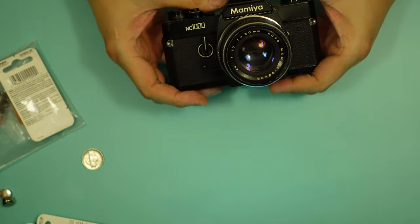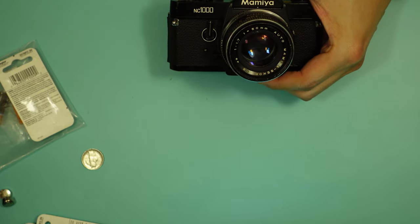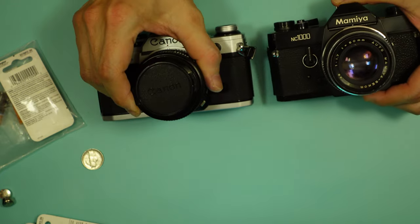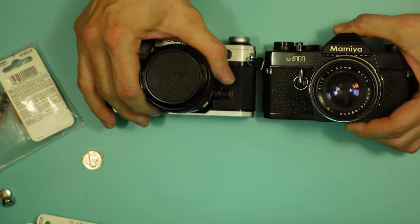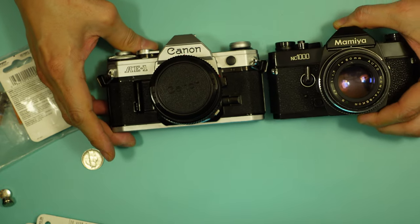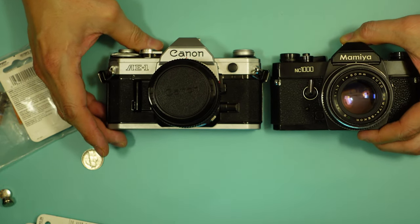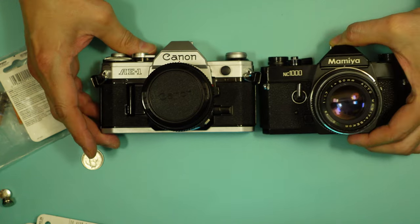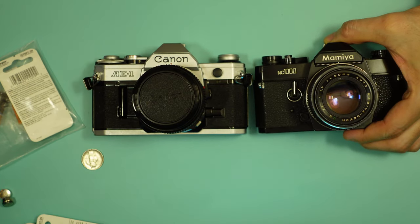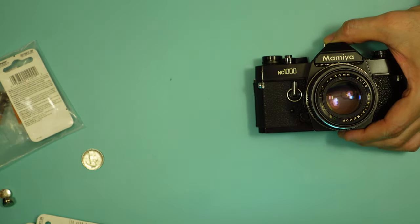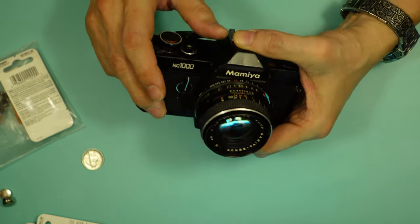I'm going to guess from the size, very similar in size, this is real similar in size to the Canon AE-1. Slightly shorter. So I'm going to guess that this was made in the 70s, 1970s.